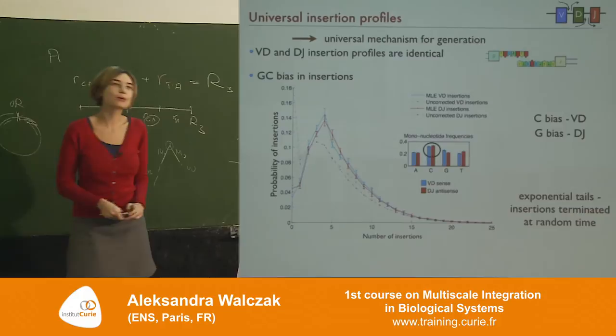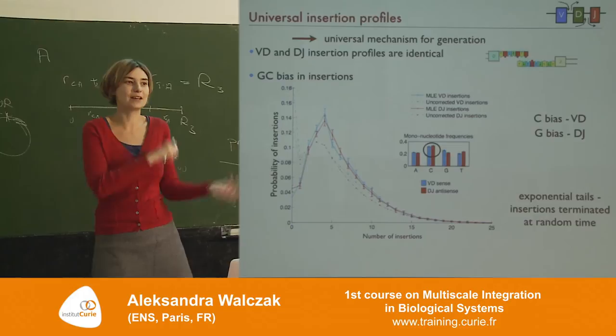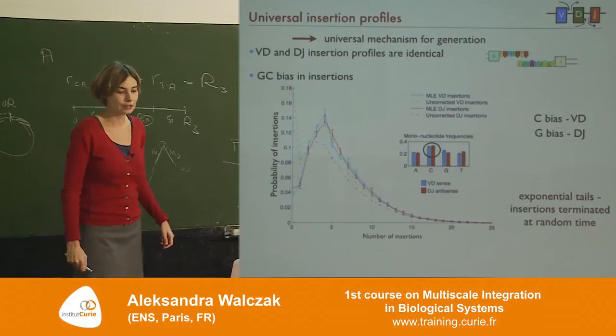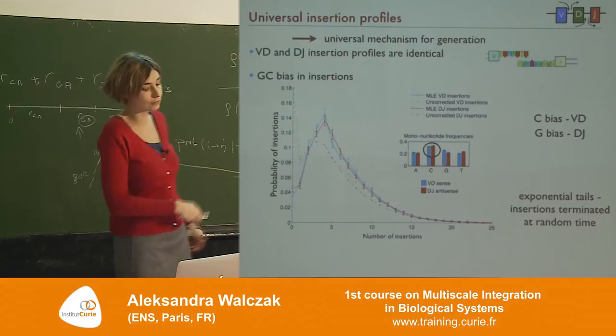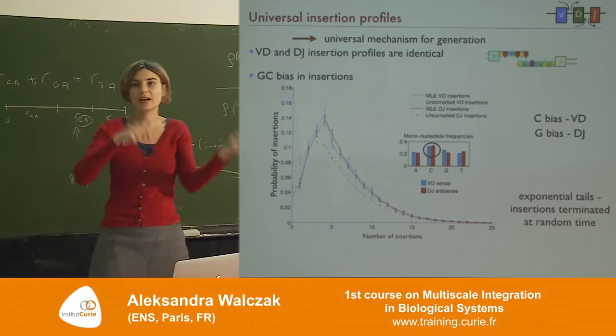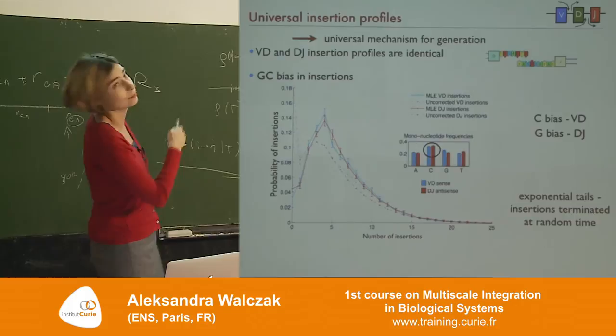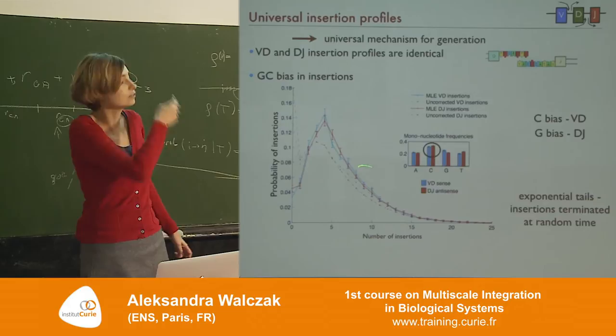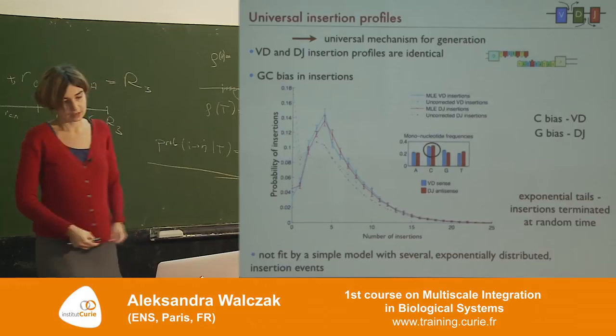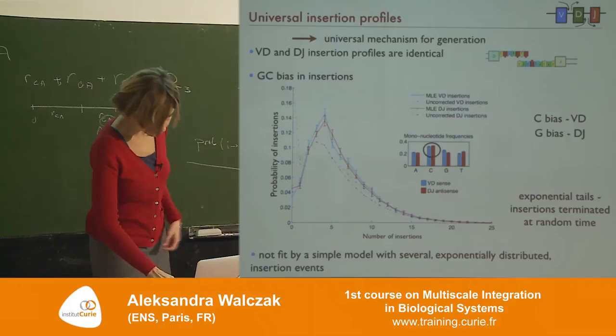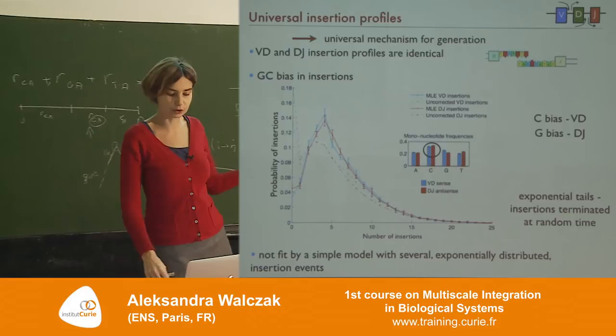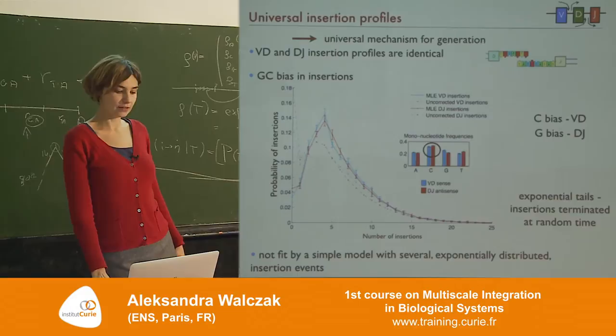The insertion distributions have exponential-looking tails, and with a physicist's intuition you'd think an enzyme comes and after some random time it falls off. We tried that — it didn't work; it doesn't fit the whole distribution, especially the lower part. We tried double exponential, triple exponential — none of this works. We basically don't have a mechanistic model for why this distribution has this shape. The main point is that it's a very, very universal model — and now we've generated these sequences, and we want to understand what is the diversity of this generated repertoire.